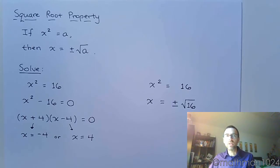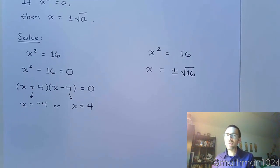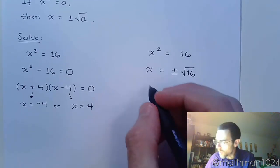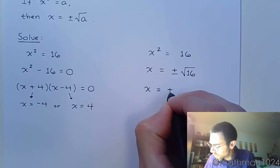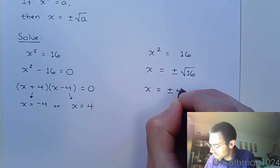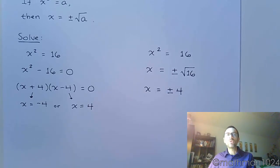So x equals plus or minus the square root of 16. And you don't want to leave that as plus or minus the square root of 16 because you can simplify. So x is equal to plus or minus 4. So you still get two solutions, but it's kind of condensed here.